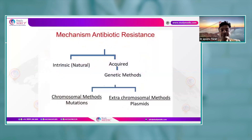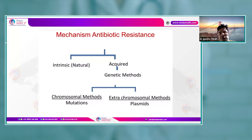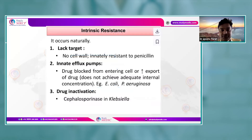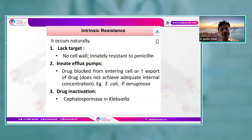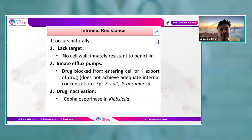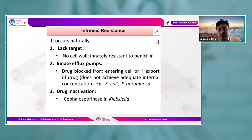Antibiotic resistance can be intrinsic — inherited to progeny — or acquired, via genetic methods including chromosomal or extra-chromosomal mutations. Extra-chromosomal resistance is via plasmid, transferred from one bacterium to another. Intrinsic resistance is natural; for example, if a bacterium lacks a cell wall, it is inherently resistant to penicillin, since penicillin acts on the cell wall.